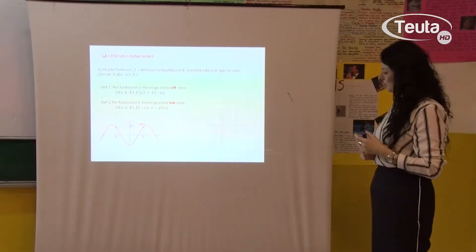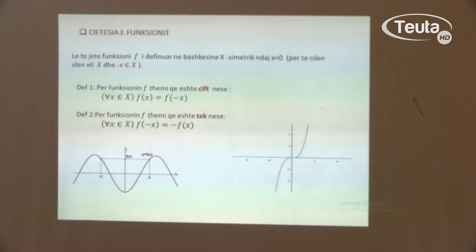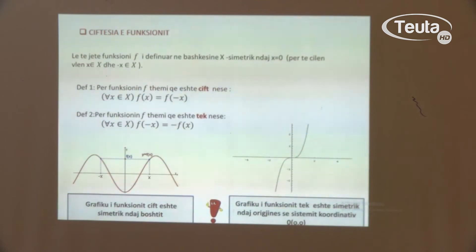Tani këtu kemi të paraqitur një funksion tjetër. Në këtë funksion shohim që nëse marrim vlerën e x-it dhe vlerën e -x-it, do të fitojmë vlera të njëjta, por me parashenjë të kundërt. Pra, duhet të mbani mend që grafiku i funksionit qift është grafik i cili është simetrik ndaj boshtit y, kurse grafiku i funksionit tek është grafik i cili është simetrik ndaj origjinës së sistemit koordinativ.